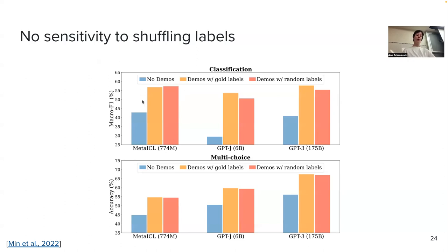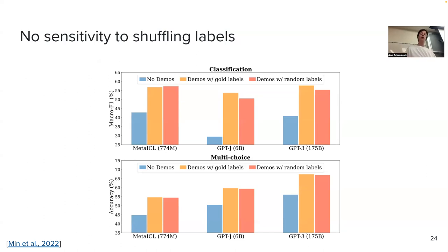The interesting comparison is between the three bars for each group. The reason they show multiple task types and models is to show that these results generalize across tasks and models. I could have shown just one to make the point, but they showed everything.